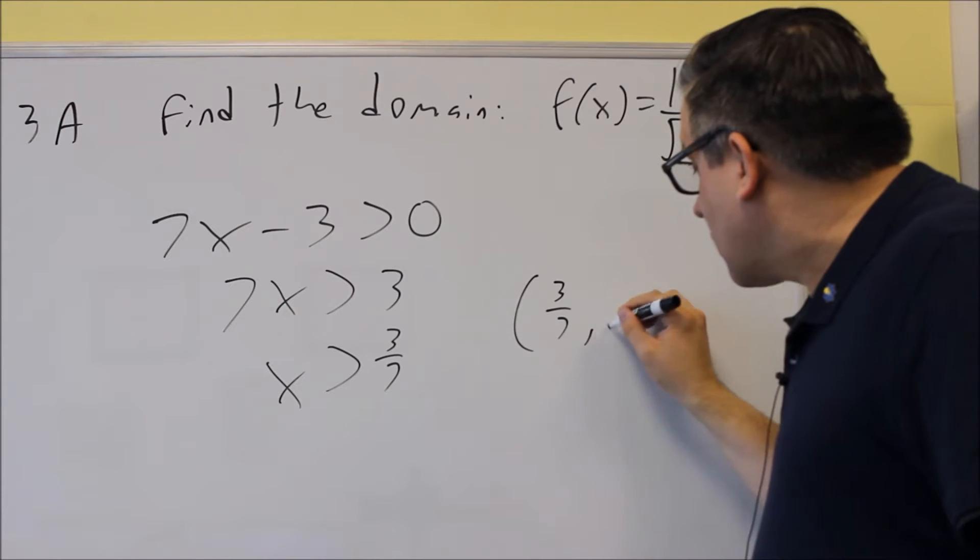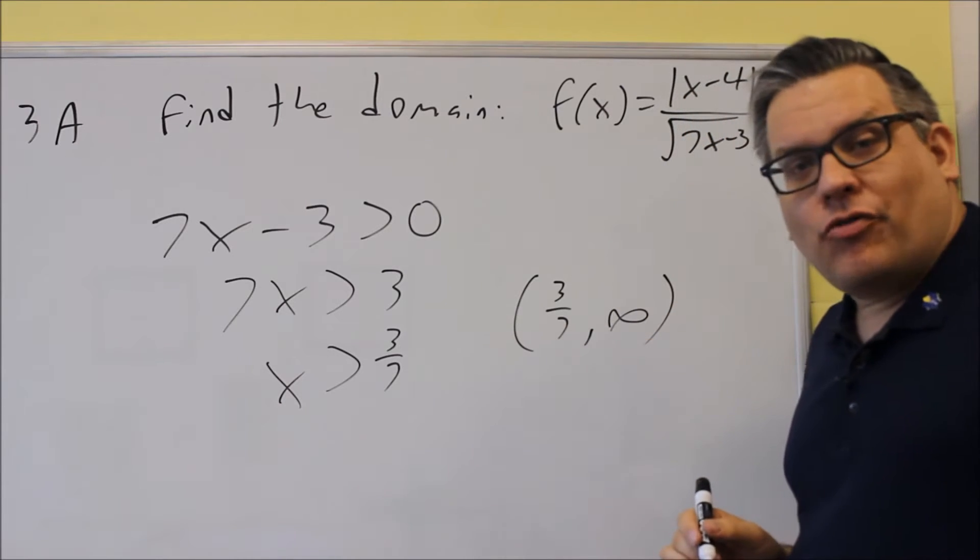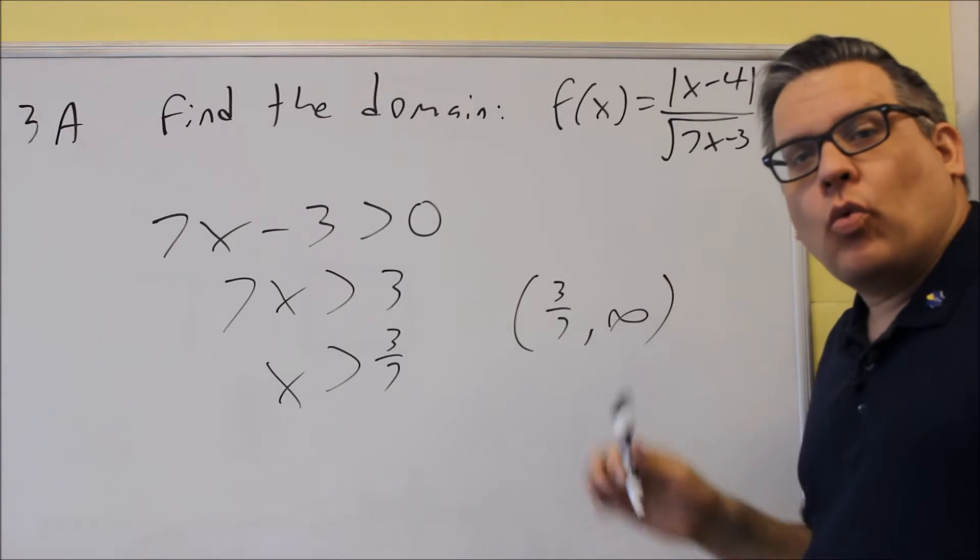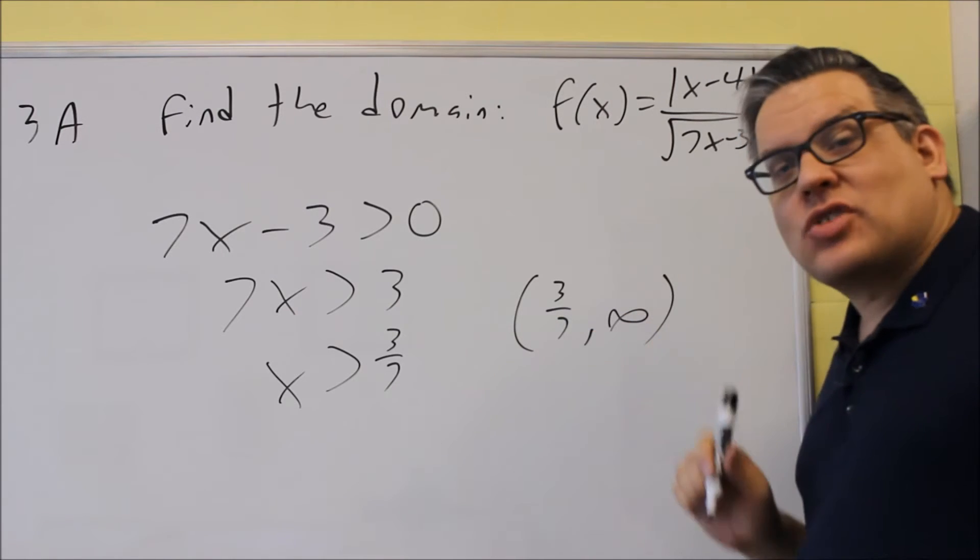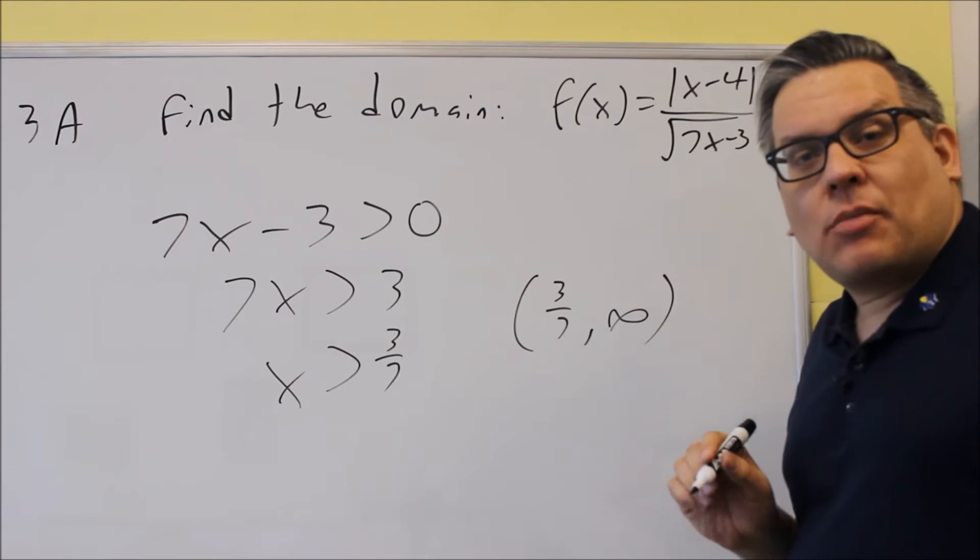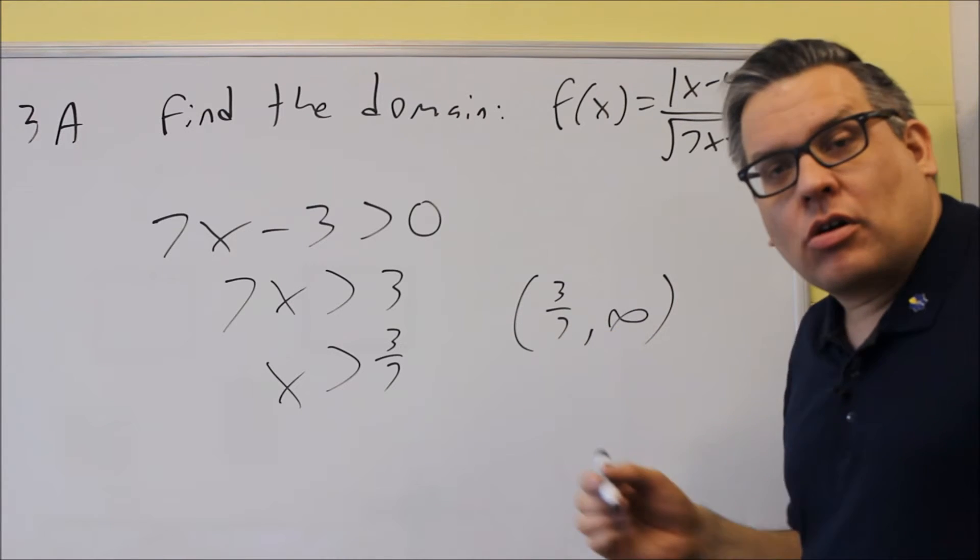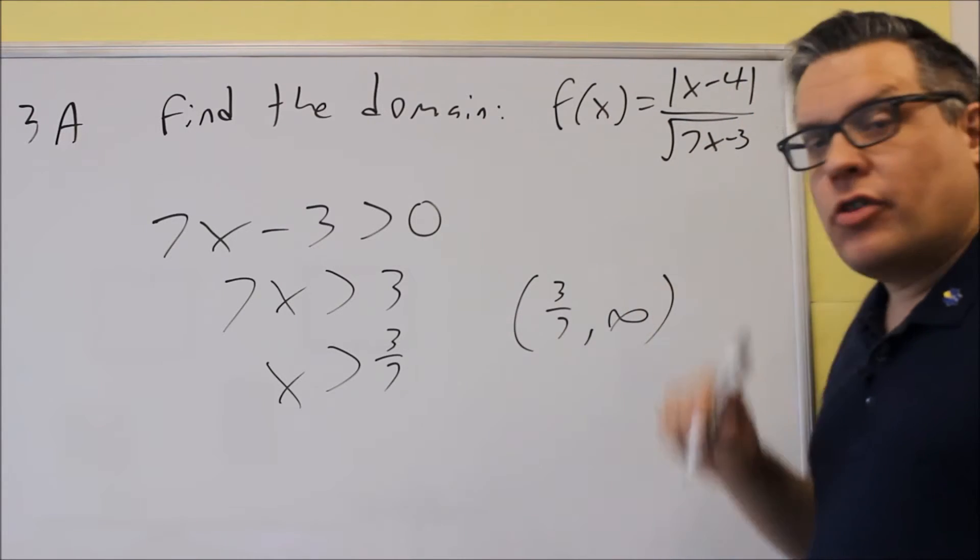Because there's no equal sign underneath, we're going to use a parenthesis. And we put 3/7 there, and that's going to go to infinity. So that would be what numbers are allowed. So as long as I pick numbers between 3/7 and infinity, I'll guarantee that I'm not going to divide by zero or have a square root of a negative number.